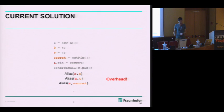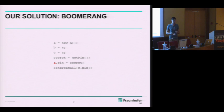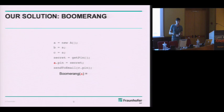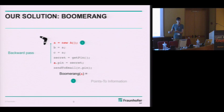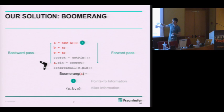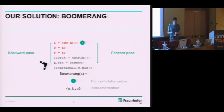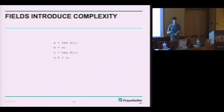Therefore we designed Boomerang. Boomerang is a flow-sensitive analysis that you can trigger at any statement — you can query for a variable at a given statement. For example, to know what are the aliases of A, it first computes a backward pass discovering the points-to information, and then computes a forward pass to find all aliases. The result set of Boomerang is quite rich: you get both points-to information and all aliases directly.